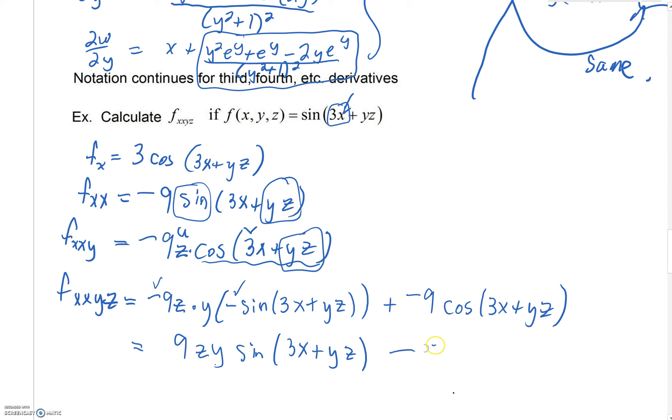And then right here we'll have our minus 9 cosine of 3x plus yz. And that's all we have to do for these problems.